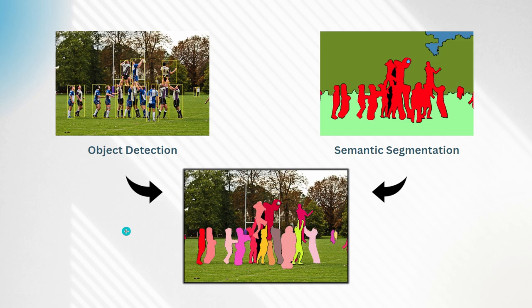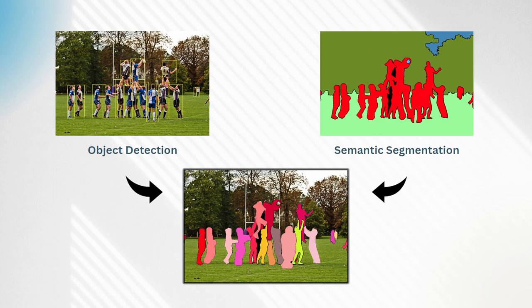Instance segmentation takes it yet another step further by not only identifying and classifying the objects, but also distinguishing between individual instances of each object. Not only can it identify all objects of a particular type within an image, but it can also distinguish between all of the different ones. That is why it's called instance segmentation — it can tell between the different instances of a particular object. All the players are identified on the field but given different colors. It's also more precise than object detection because it identifies objects using polygons accurate down to the pixel instead of a box.